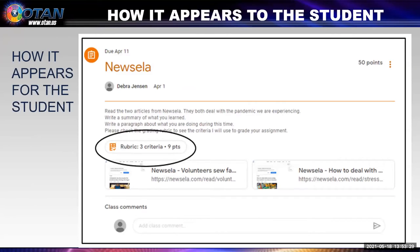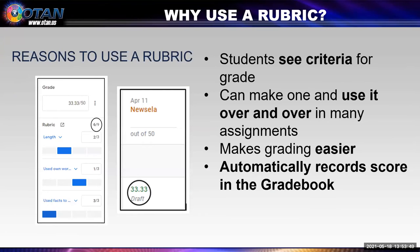After you create the rubric, it'll appear with the assignment and the student can see what you will be looking for in evaluating the assignment. Here you see rubric three criteria, nine points, circled in the Newsela reading assignment — they can click on it and see what you're looking for. Reasons to use a rubric: one, students can see the criteria, what it takes to improve, and once they receive the score they'll see what they didn't do. Two, once you make the rubric, you can use it over and over. And three — the biggest reason — Google automatically records the score in the gradebook, so it makes it really fast.